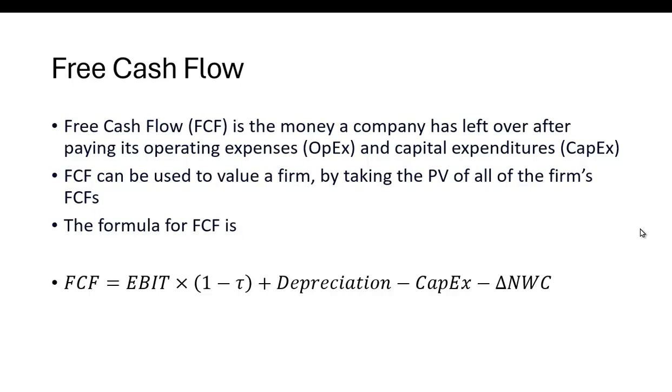So the formula for free cash flow is EBIT times one minus the tax rate plus depreciation minus capital expenditures minus any changes in net working capital. You add back in depreciation because it's a non-cash expense, so you have to take it out when you're computing taxes but you want to put it back in because you're not actually paying anybody for that.